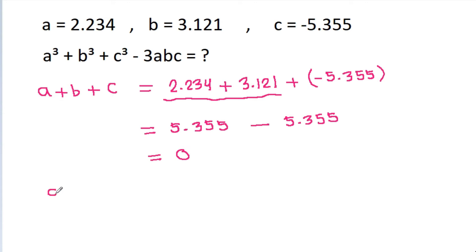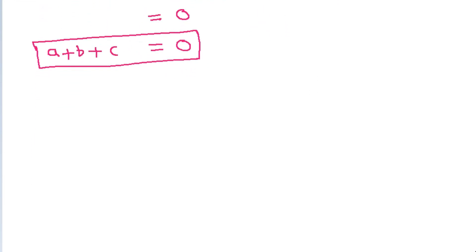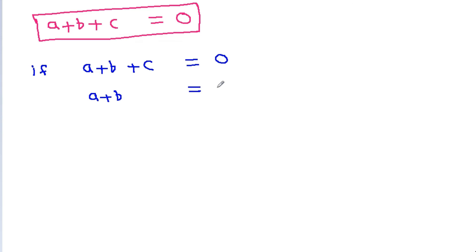So we get a plus b plus c is equal to 0. And if a plus b plus c is equal to 0, then a plus b will be equal to minus c.